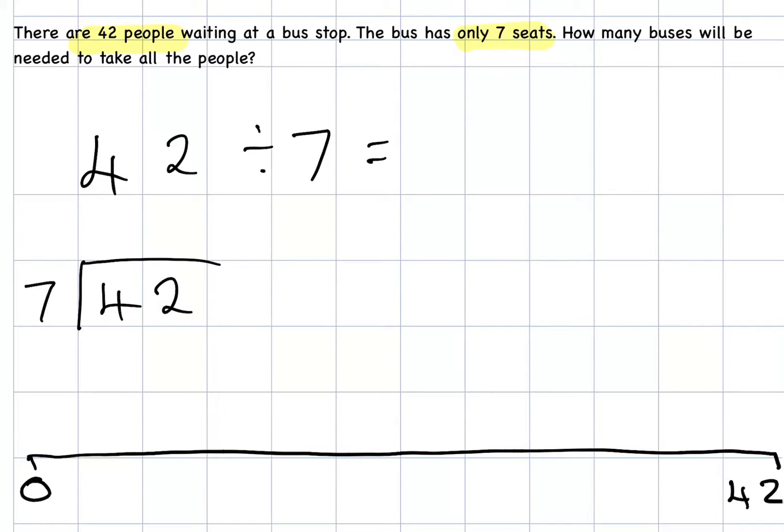So, the first bus comes along, and it picks up 7 people. We can put some dots in here to help us count on if we need to. Then, another bus is going to come along, and it's going to pick up another 7 more people. 7 add 7 would get me to 14. Then another bus comes along, and it picks up another 7. 7 add 14, add that 7, gets us to 21.